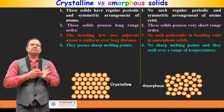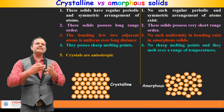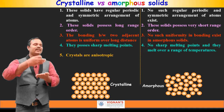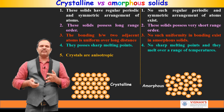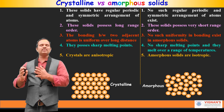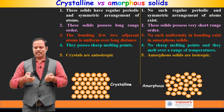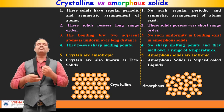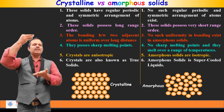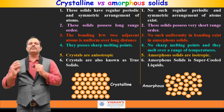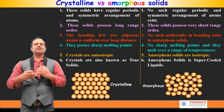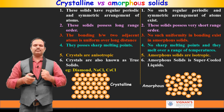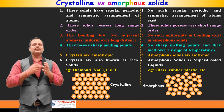Crystalline materials are anisotropic, meaning properties such as electrical conductivity, thermal conductivity, and mechanical strength differ in different directions. Amorphous materials are isotropic because atoms are arranged randomly. Crystalline materials are also called true solids, while amorphous materials are called super-cooled liquids, because they are prepared by heating to a molten state and then cooling suddenly. Examples of crystalline materials are diamond, sodium chloride, and cesium chloride. Examples of amorphous materials are glass, rubber, and plastic.